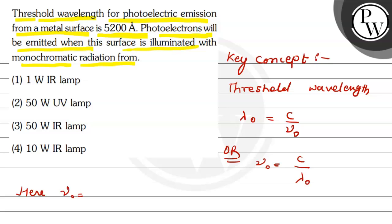Here nu not is equals to threshold frequency and c is equals to velocity of light.